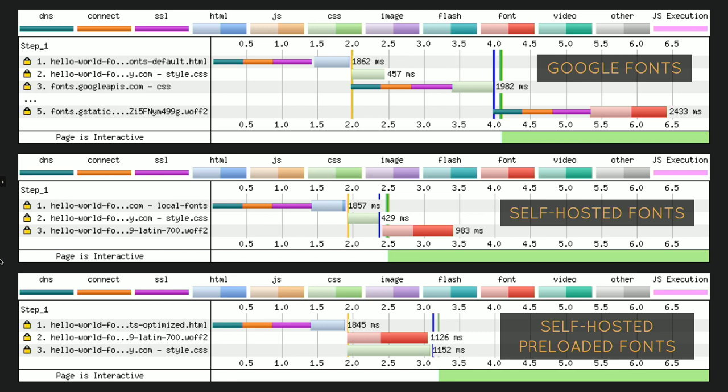Let's look at how that improves performance. In the middle we have the self-hosted fonts from before, and at the bottom we have self-hosted fonts with preloading enabled. You can see that immediately as the HTML is downloaded the fonts start loading. But you can also see something else: the first paint with self-hosted fonts came at 2.5 seconds, but now it comes at 3 seconds. What's happening is that the font with high download priority is clobbering the bandwidth and preventing the CSS from loading quickly. There's something we can do about that.